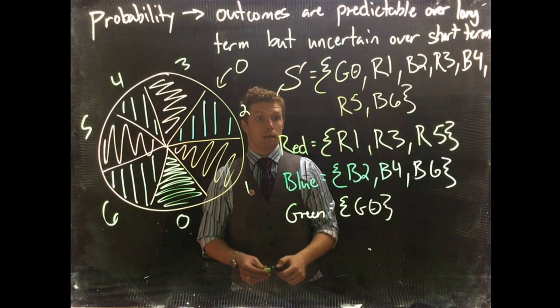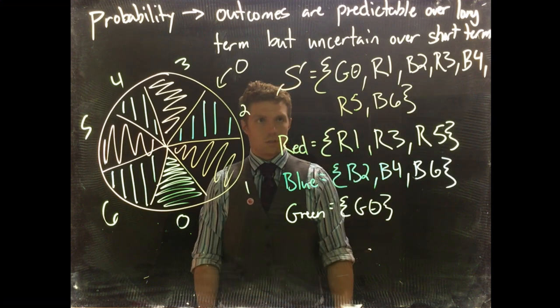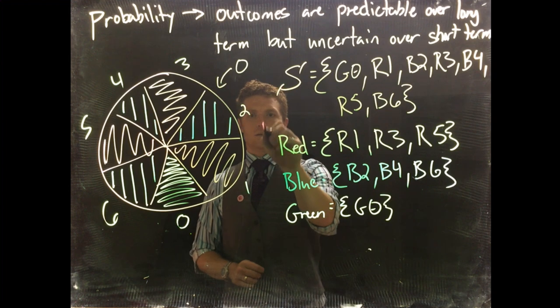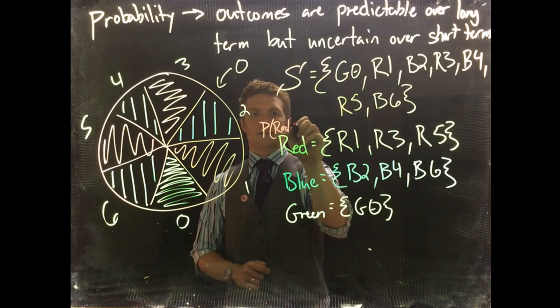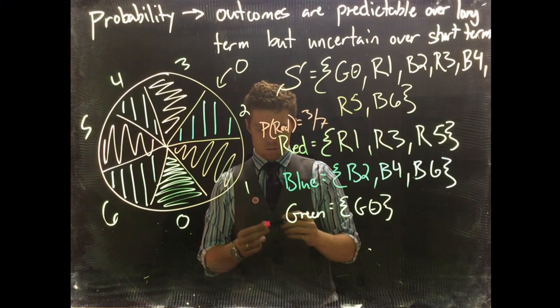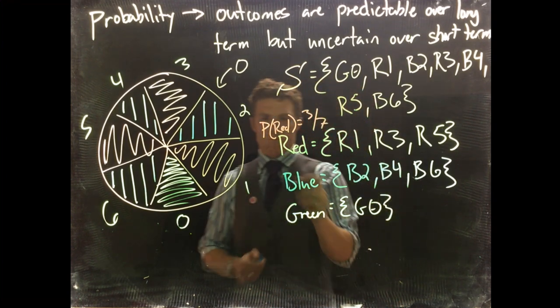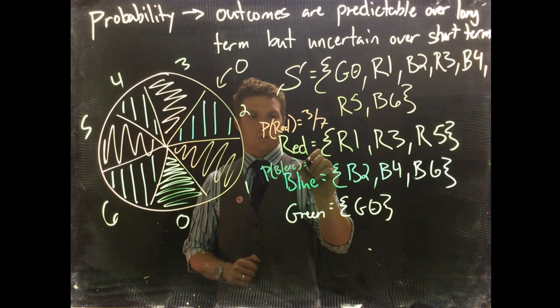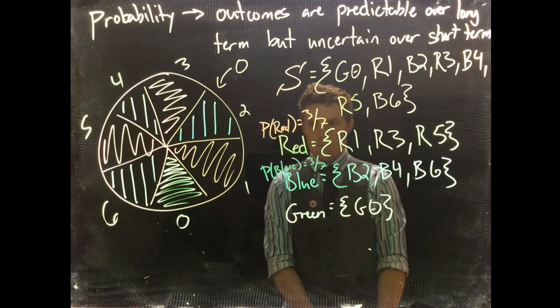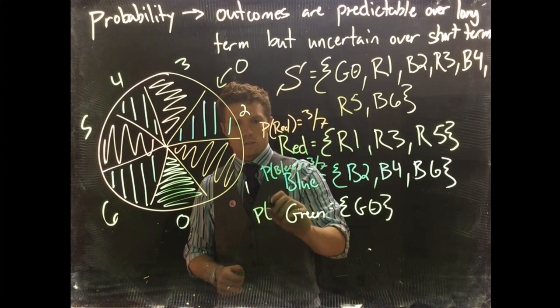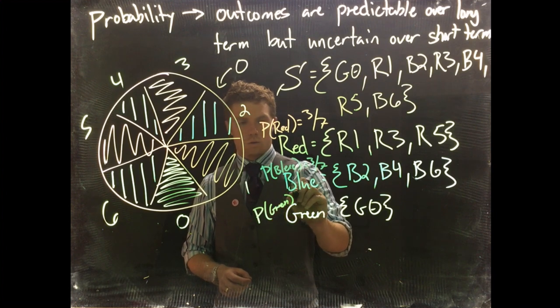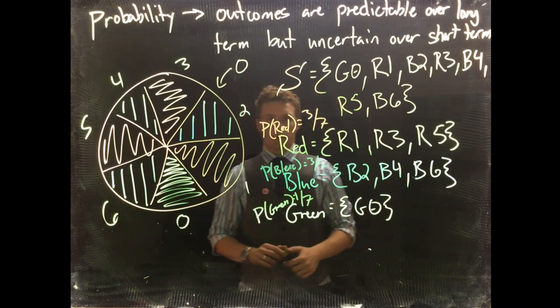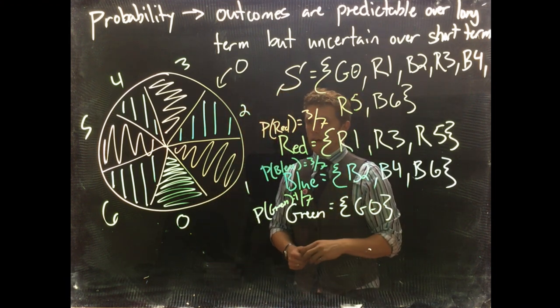Okay, so we can find the probabilities now of each of these. We know that there are seven total outcomes in the sample space. And for red, the probability here, probability of red, is equal to three-sevenths. We know that the probability of blue is then also going to equal three-sevenths. And the probability of green is going to be equal to one-seventh.